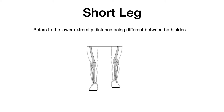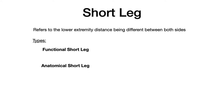As you can see in this example, if you were to measure both of these lower extremities from the top black line to the bottom black line, you would notice that there is a short leg on the left and there's a discrepancy in the total measurement. When we talk about short legs, there are actually two types: a functional short leg or an anatomical short leg.